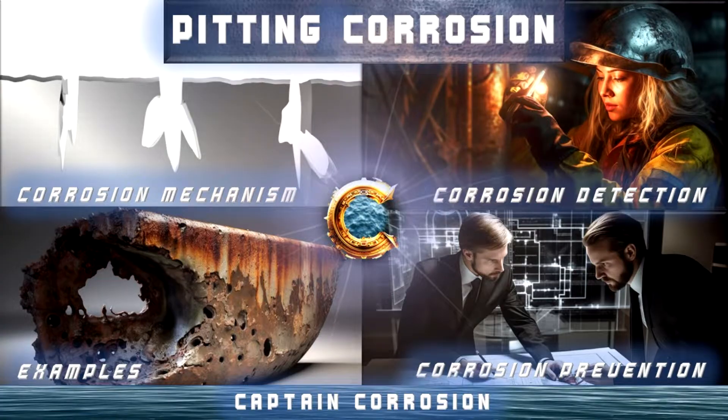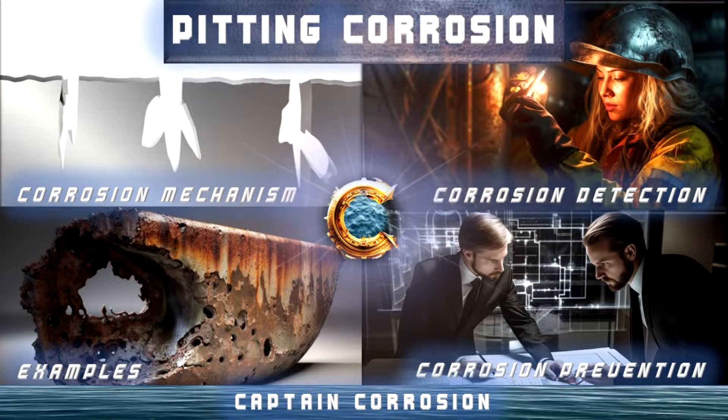Pitting corrosion is a localized form of corrosion that leads to the formation of small pits or cavities on the surface of a metal. It occurs when a small area of the metal is exposed to a more aggressive environment, while the surrounding area remains relatively protected. You are watching a Captain Corrosion video where you will learn about the mechanisms of pitting corrosion, how to detect it, where it occurs in daily life, and the preventative measures to stop it.